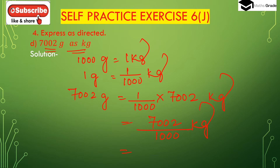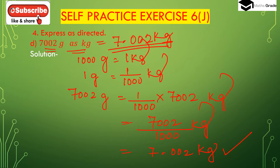In the denominator, 1000 has 3 zeros, so we place 3 digits after the decimal place. It will be 7.002 — 002 are the 3 digits after the decimal place. So 7002 grams is 7.002 kg.